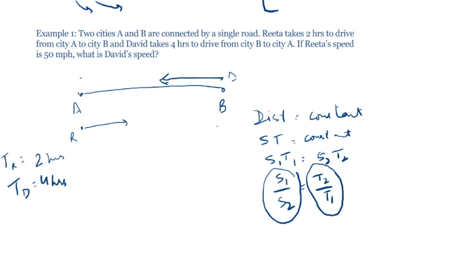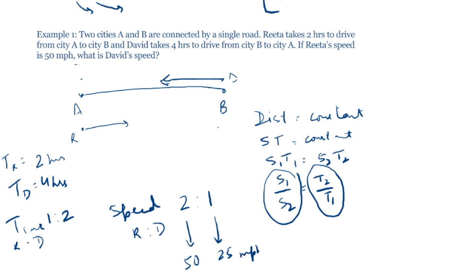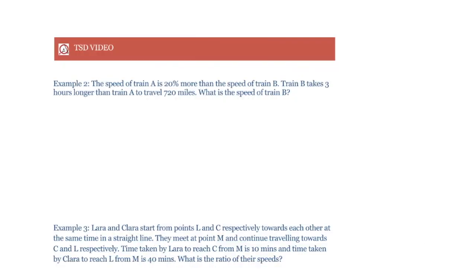The time ratio of Rita to David is 2:4, which is 1:2. Since they cover the same distance, the ratio of their speeds is the inverse: 2:1. Given Rita's speed is 50 mph, David's speed must be 25 mph.